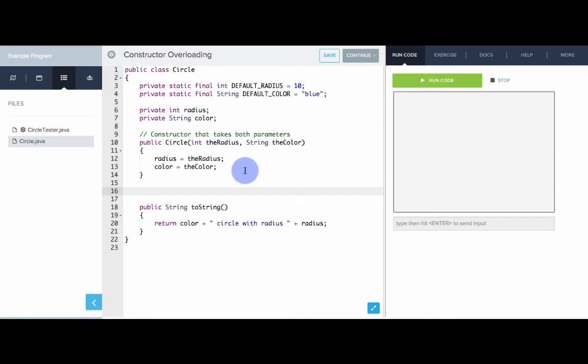Method overloading can be very useful for providing more convenient methods to programs that are using the classes that we write. So, here we have a circle class, and right now it has one constructor that takes a radius and a color. Well, what if someone using our class wanted to make a circle, but they only wanted to specify the radius, they didn't care about the color. We should provide a constructor that only takes a radius. Likewise, with just a color, and maybe even a no-argument constructor.